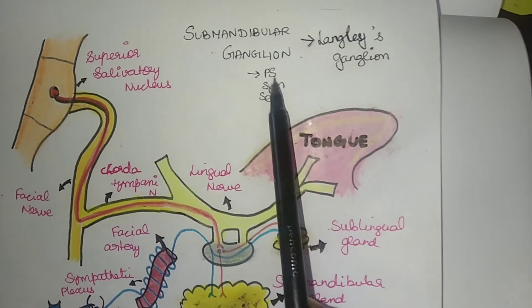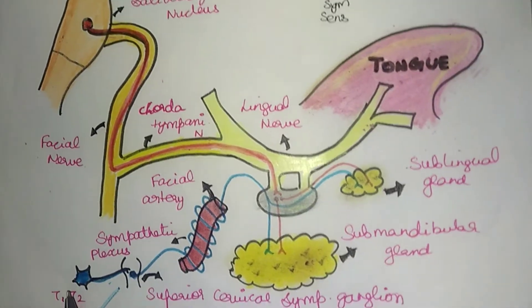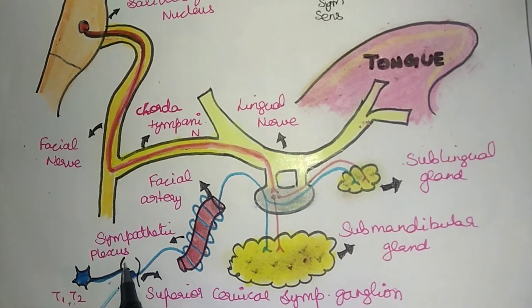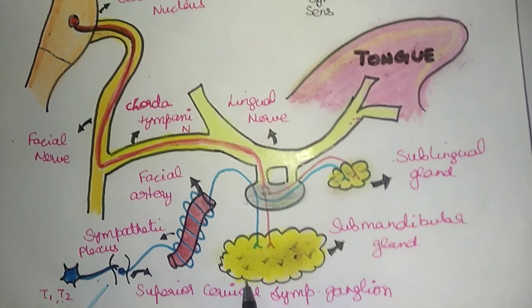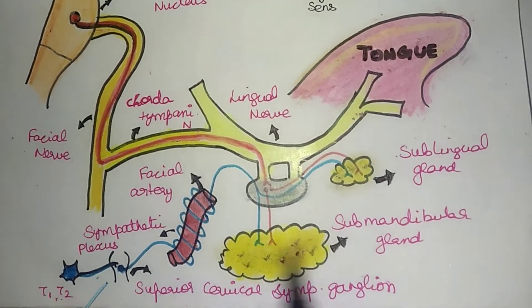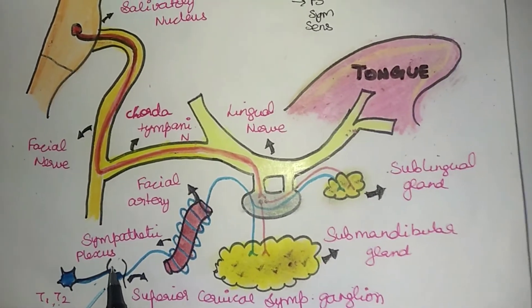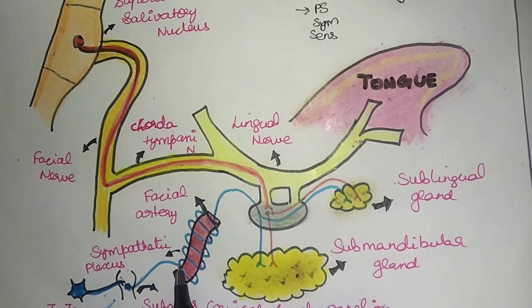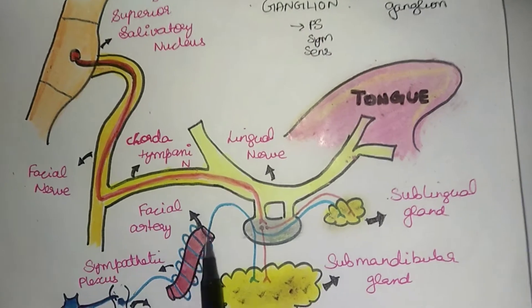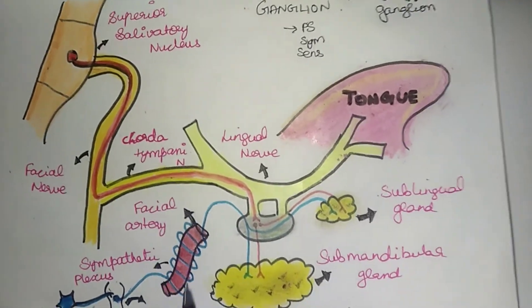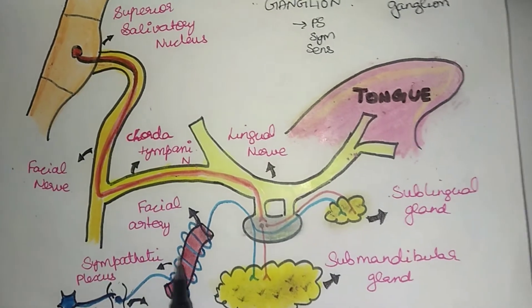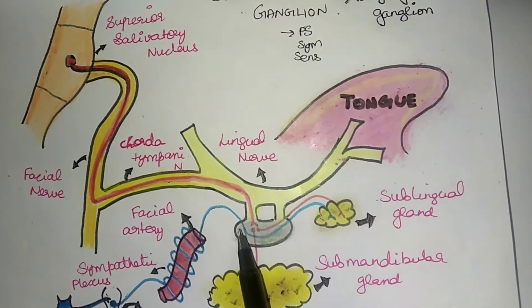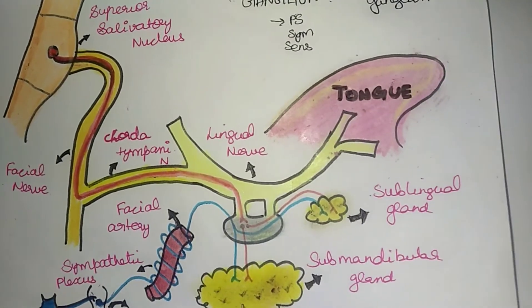For the sympathetic root: sympathetic fibers originate from the T1–T2 level of the spinal cord. They relay at the superior cervical sympathetic ganglion. Post-ganglionic sympathetic fibers then wind around the facial artery, forming a sympathetic plexus. These fibers pass through the submandibular ganglion without any relay and go directly to the submandibular and sublingual glands.